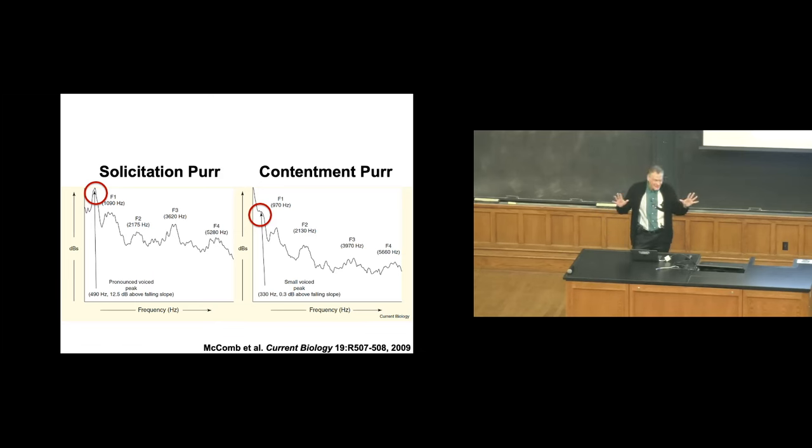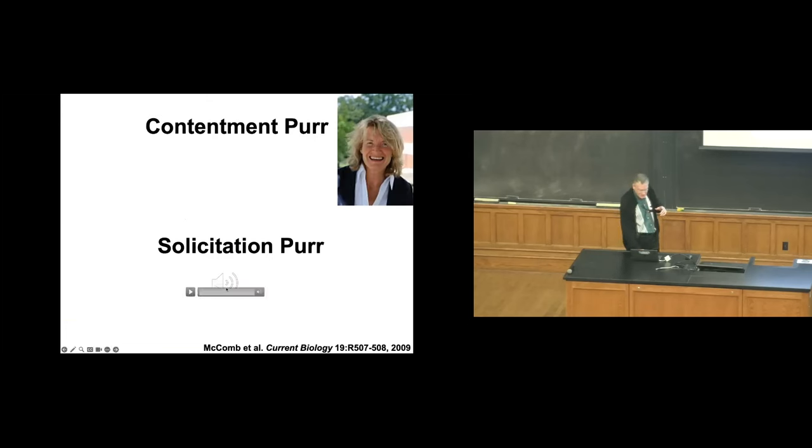But then she had this explanation. She said that sounds of this frequency are the same frequency that human babies crying make. And she said her argument was that humans are innately attuned to the sound of a baby crying. That gets our attention really very effectively. And so her argument was that cats had evolved to basically exploit our sensory system to use the sound that gets our attention to purr when they want our attention. Listen to the solicitation purr again and see if you hear a baby crying. So it seems that the cat's meowing and purring has evolved during domestication.